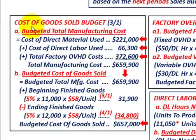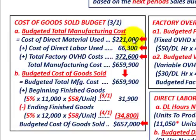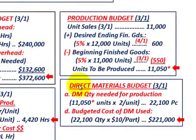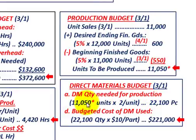Now moving to our cost of goods sold budget setup: we take our budgeted total manufacturing cost, starting with the cost of direct materials used, which is $221,000. Let's walk through the direct materials budget. We start with the quantity of direct materials needed for production: 11,050 units times two parts per unit gives 22,100 pieces.